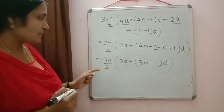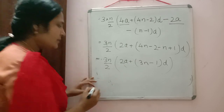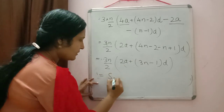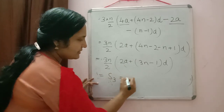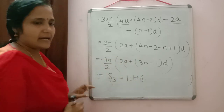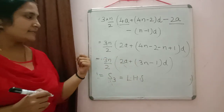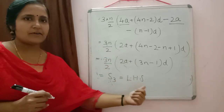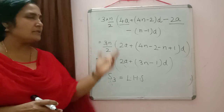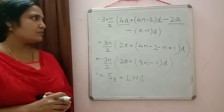Checking our expression for s3: s3 equals 3n/2 into (2a plus (3n minus 1) into d), which is exactly what we derived. So RHS equals LHS, and we have proved that s3 equals 3 into (s2 minus s1). The method is clear.